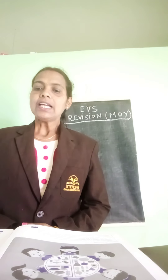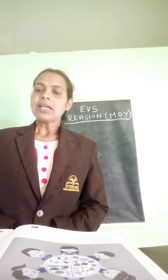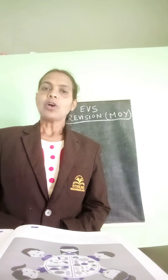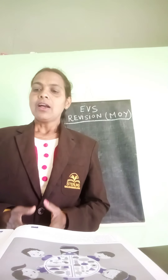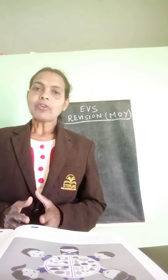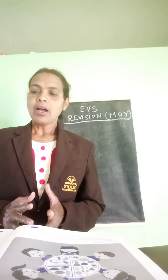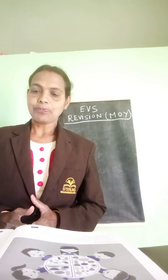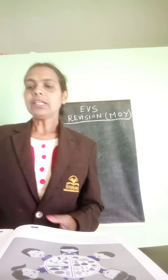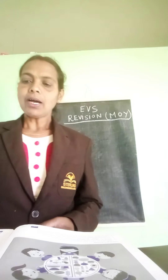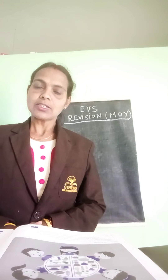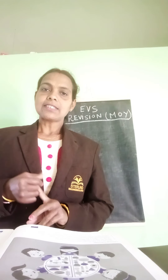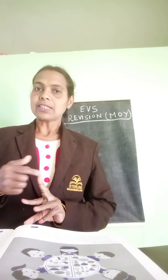Next question: define an organ system and state two examples. A group of organs working together to perform a series of functions in our body is called an organ system. Examples of organ systems are the digestive system and circulatory system.